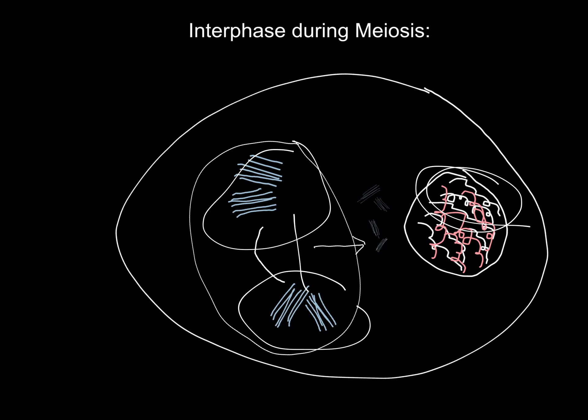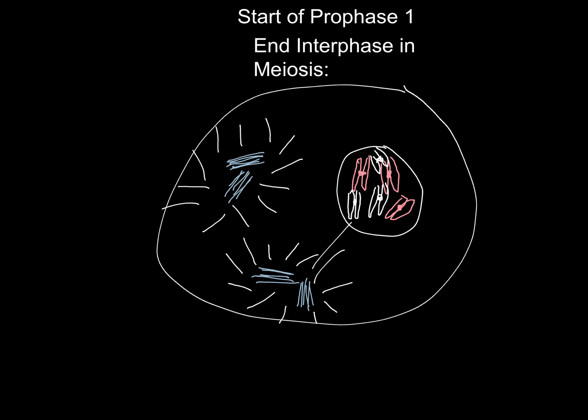The pair of centrioles and the cytoplasm duplicate and begin extending microtubules that will form the meiosis spindle. Each chromosome has two sister chromatids held together by a centromere, as shown here with the two chromatids held together by the small centromere, and condenses as it enters prophase one.